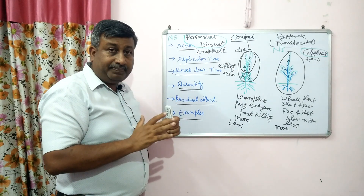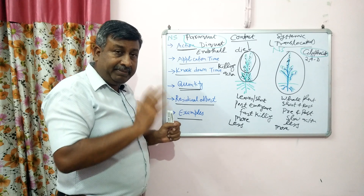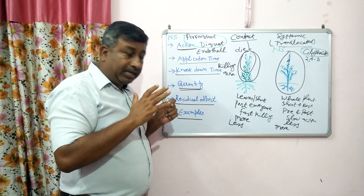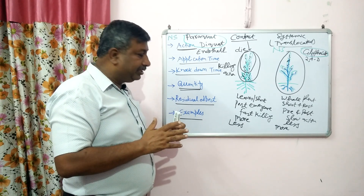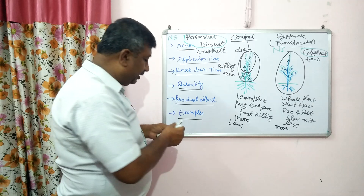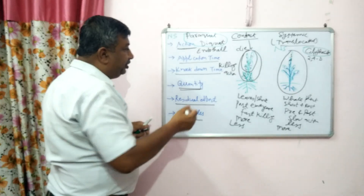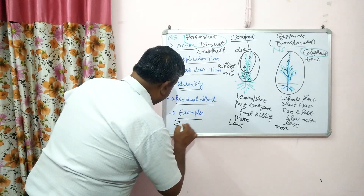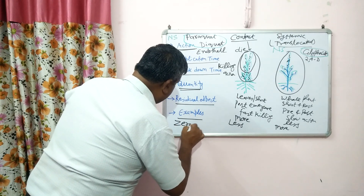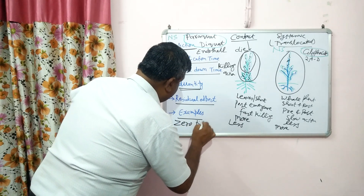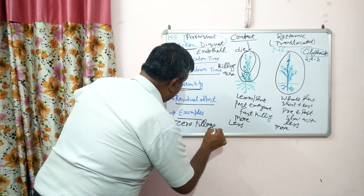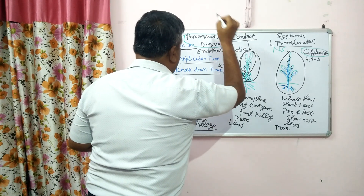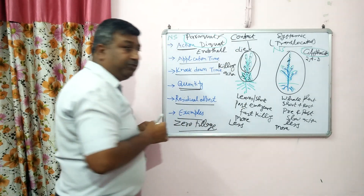Contact herbicides are very good because they kill immediately and have less residual effect. That is why they are very useful in zero tillage systems. In zero tillage, paraquat (Gramaxone) is commonly used.